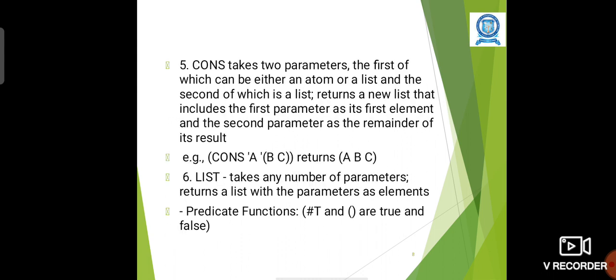CONS takes two parameters. The first can be either an atom or a list, and the second is a list. It returns a new list that includes the first parameter as its first element and the second parameter as the remainder of the result. So CONS A apostrophe (B C) returns (A B C). And the next command is LIST. It takes any number of parameters and returns a list with the parameters as elements.